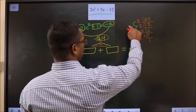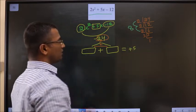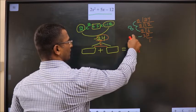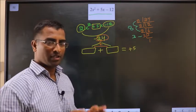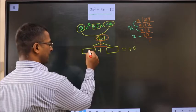So, now 8 minus 3 is 5. 8 into 3 is 24. Clear? So, the numbers will be 8 and 3.